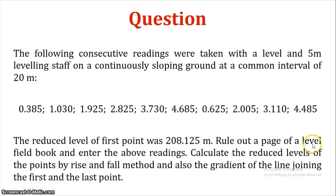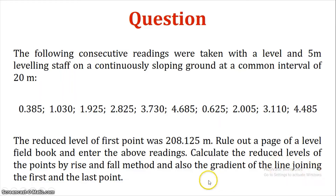Rule out a page of a level field book and enter the above readings. Calculate the reduced levels of the points by rise and fall method and also the gradient of the line joining the first and last point.